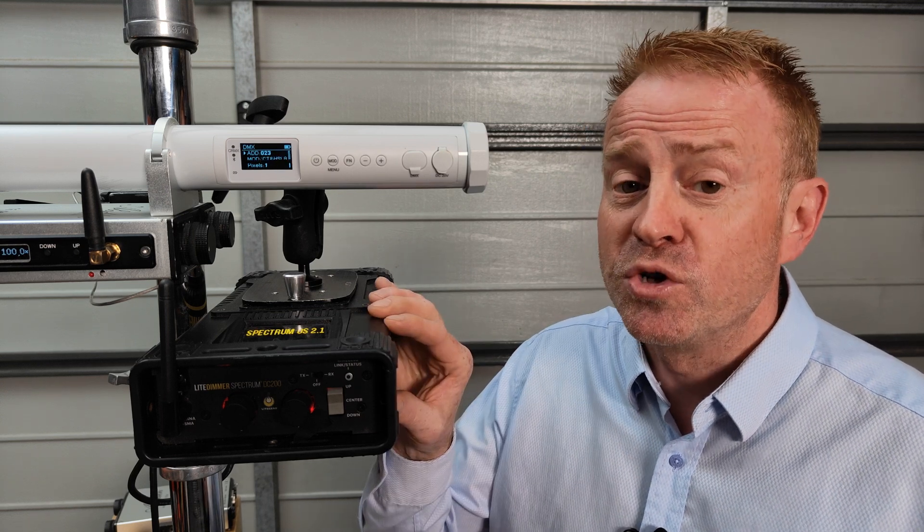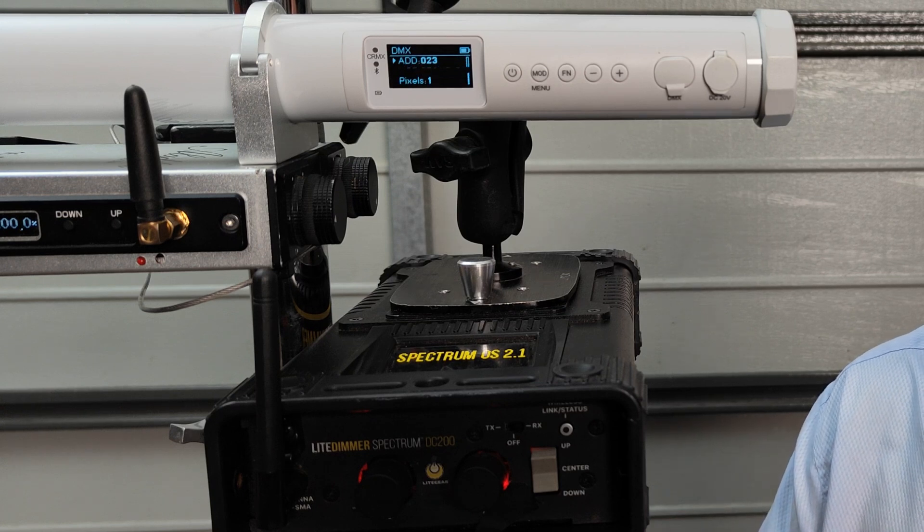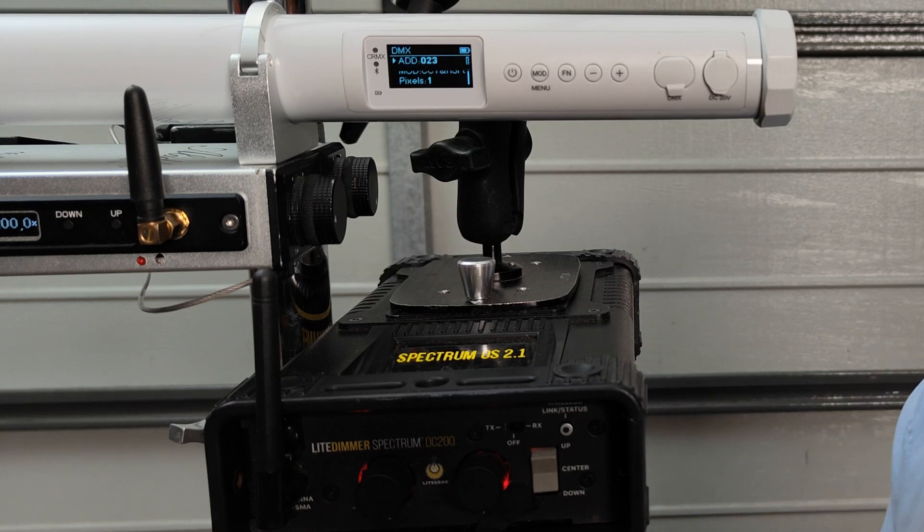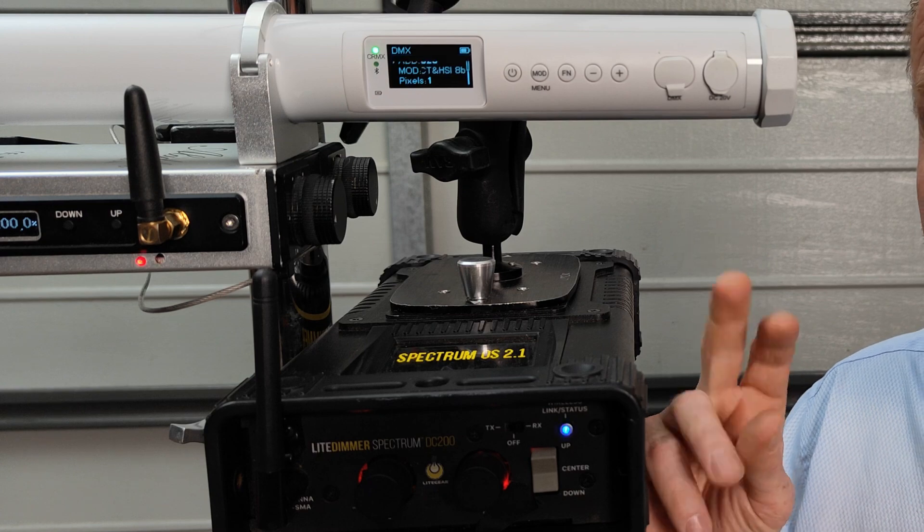It could also mean that the CRMX receiver module is actually turned on. It's just not linked to a transmitter yet. Now, a quick way to figure out which of the two scenarios it is, is to hit the link button on your transmitter. Now, when you send a link command through, the light should flash momentarily. Now, at the end of flashing, one of two things will happen. It will either go to a solid light like these have now, or the light will just turn off.